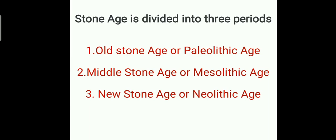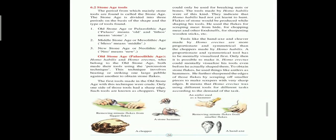So let's understand and learn about these three periods and the tools made in these periods. First, the old stone age or Paleolithic age — 'paleo' means old and 'lithos' means stone, so old stone age.